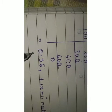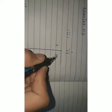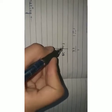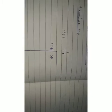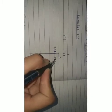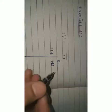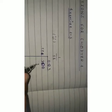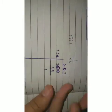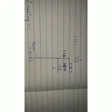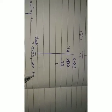Now the second part: 1 upon 11. We write 11 outside and 1 inside. Since 1 is smaller than 11, we put 0 and a decimal point, then add zeros. Dividing 10 by 11 still gives 0 remainder 10; then 100 by 11 gives 9, remainder 1, and this process continues. The answer is 0.09 bar — repeating infinitely — so it is a non-terminating and repeating decimal.